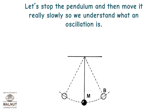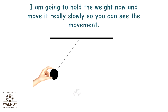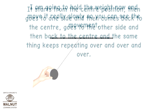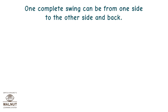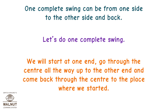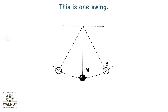Let's stop the pendulum and then move it really slowly so we understand what an oscillation is. I am going to hold the weight and move it really slowly so you can see the movement. It starts from the center position, then goes back to one side and then comes back to the center, goes to the other side and then back to the center, and the same thing keeps repeating over and over. One complete swing can be from one side to the other side and back. We will start at one end, go through the center all the way up to the other end and come back through the center to where we started. This is one swing.